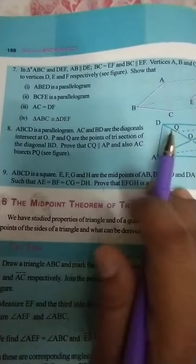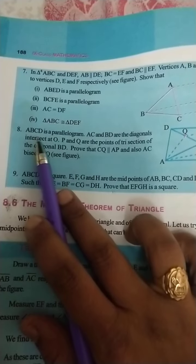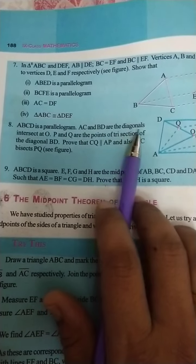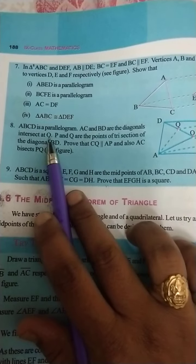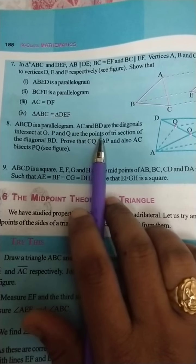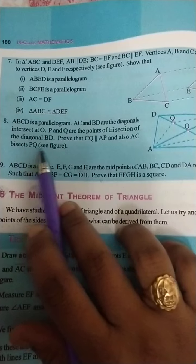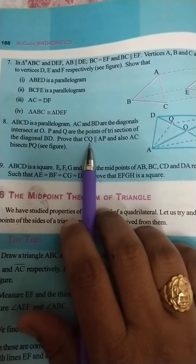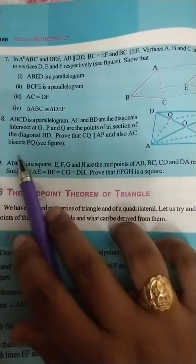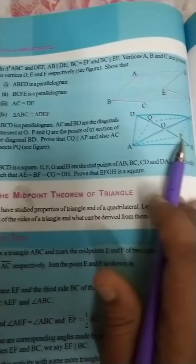The 8th question is: ABCD is a parallelogram, AC and BD are the diagonals intersected at O, P and Q are the points of trisection of the diagonal BD. Prove that CQ is parallel to AP and also AC bisects PQ.